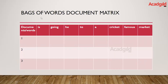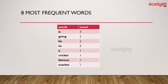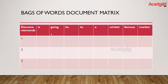Here is the bag of words document matrix. It is represented by columns and rows — in the columns you take all eight most frequent elements, and in the rows you have document one, document two, and document three — also known as sentence one, sentence two, and sentence three. The column-wise entries are the eight most frequent elements we discussed. We then take each sentence and populate values based on the words present in that sentence.